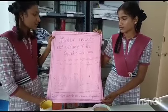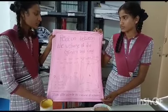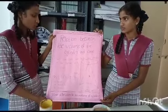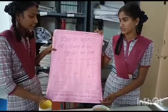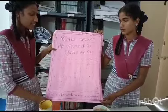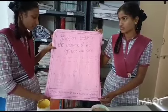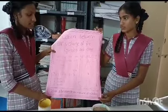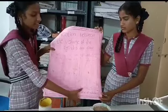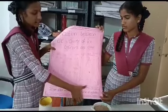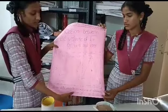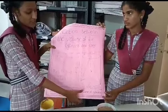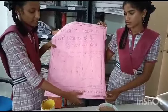Relation between the volume of the cylinder and cone. We can take same height and diameter of the cylinder and cone. This is the cylinder and the cone. Both have the same base.